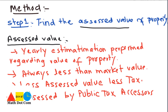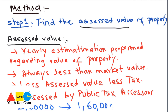There is a specific rate fixed for finding the assessed value. For example, if the market value of the property is 2 lakh and the assessed value percentage is 80%, then the assessed value would be 1,60,000. So the assessed value is less than the market value, and taxes are applied on the assessed value.